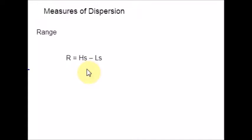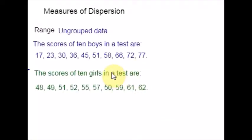Now let us see how to compute Range. I am going to take two examples: first one is for ungrouped data and second one is grouped data. Here is an example with two parts. The scores of 10 boys in a test are listed, and the scores of 10 girls in a test are also listed. First, analyze the given data. This is ungrouped data, so you just have to find the highest score and the lowest score, then apply the Range formula.